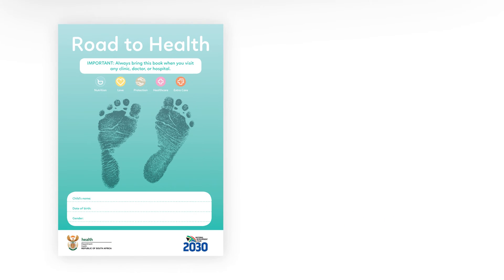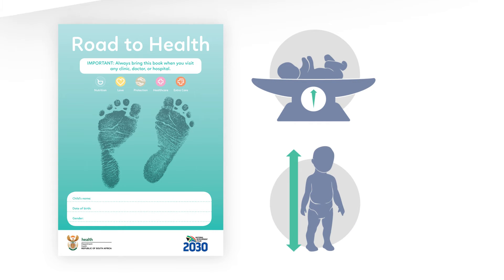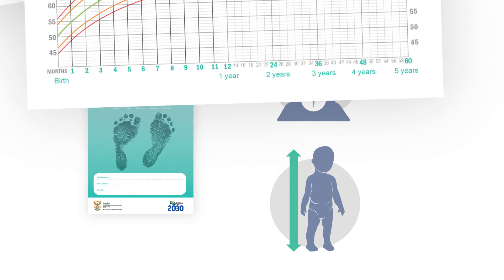In the new South African Road to Health book, the focus isn't just on weight for age, but also on height for age. This is the South African height or length for age chart.